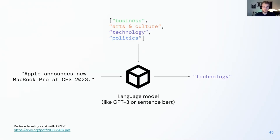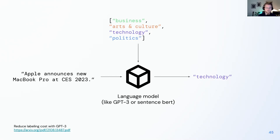For example, with a news headline like 'Apple announces a new MacBook Pro at CES 2023,' you put it into a large language model and provide a set of potential labels — business, arts and culture, technology, politics — and the model returns the correct label, in this case technology. There's a cool paper about using GPT-3 to reduce labeling cost, linked in the slides — keep in mind it's written by Microsoft so it may be a little biased, but still a good read.